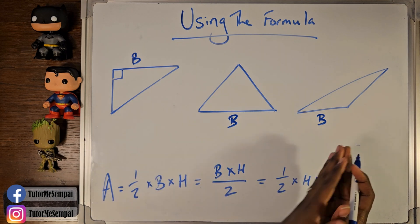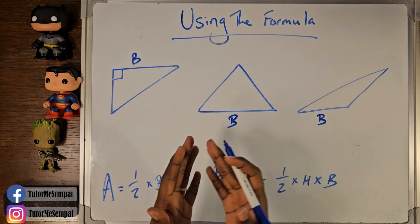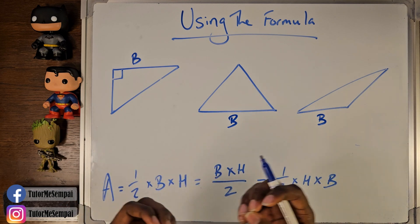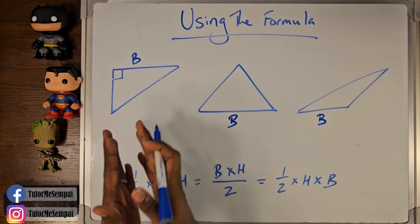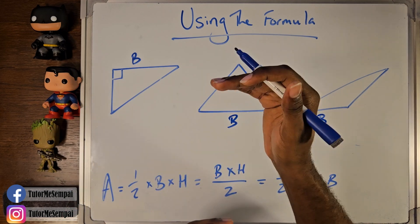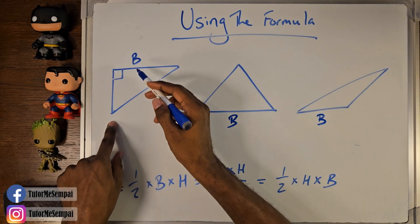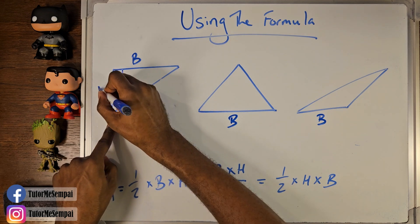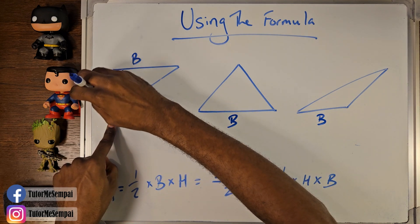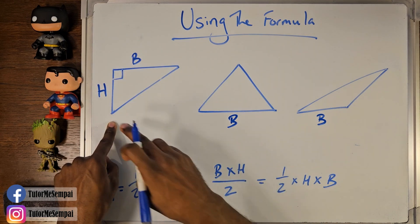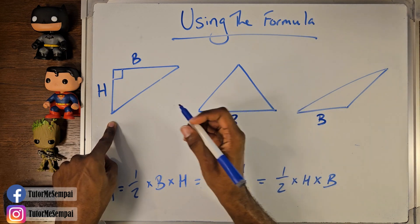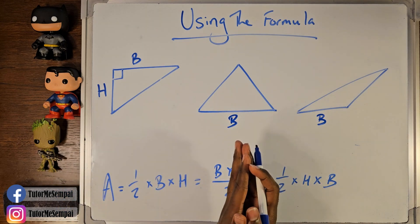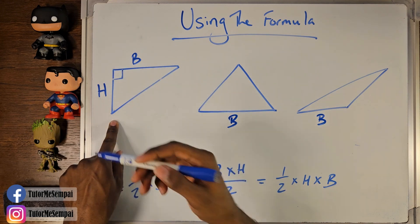So now we've found our base for each triangle. How about our height? When you think of height, you think of how tall something is. Typically you start from your base and go upward. For our right triangle, since the base is at the top, we go from the top down. We want a side that's completely perpendicular to your base. This side here is completely perpendicular, so this is going to be our height.